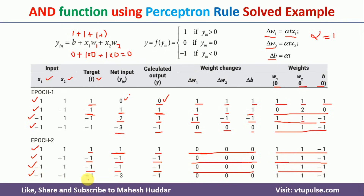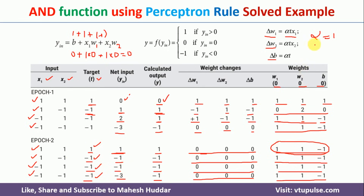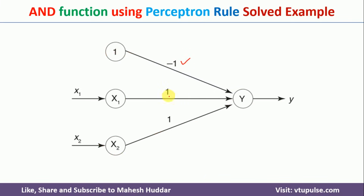We present the final input of the second epoch: x1=-1, x2=-1, target=-1. y_in = -3, which is less than 0, so output = -1 = target — no weight update needed. After the second iteration, all four inputs are classified correctly. These are the final weights: b = -1, w1 = 1, w2 = 1. This is how the AND function looks using the perceptron rule.